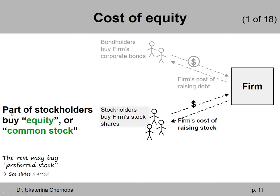So, cost of equity. That's basically the link between the firm that raises money from those type of investors who buy the firm's equity or common stock — these are two terms used interchangeably. There are other investors who buy what we call preferred stock shares, but that's going to be on later slides. So let's focus on equity or common stock, or more precisely, cost of equity from the firm's perspective.